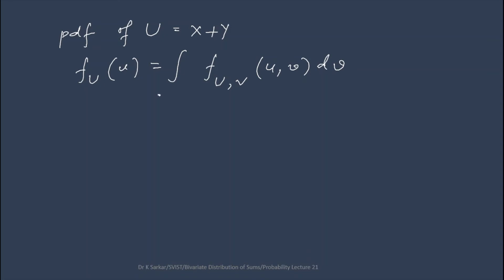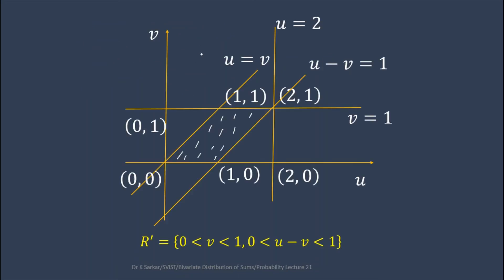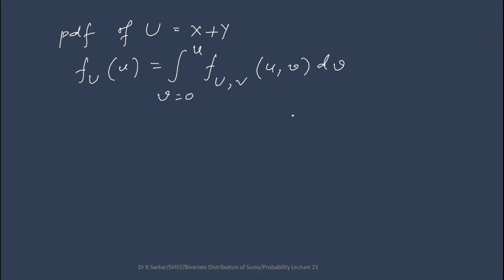The PDF of U is f_U(u) equals the integration of f(u,v) dv with limits for v. So v starts from 0 to u, as seen in the diagram — v starts from 0 and ends on the line v equals u. Putting f(u,v) equals 1, we get f_U(u) equals u, for 0 < u < 1.